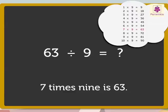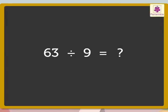7 times 9 is 63. Therefore, when we divide 63 by 9, the answer is 7.